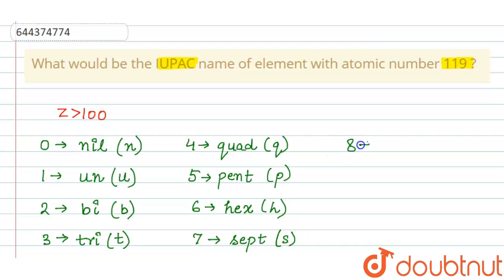Whereas 8 is named as oct and o. And 9 is named as enn and e.